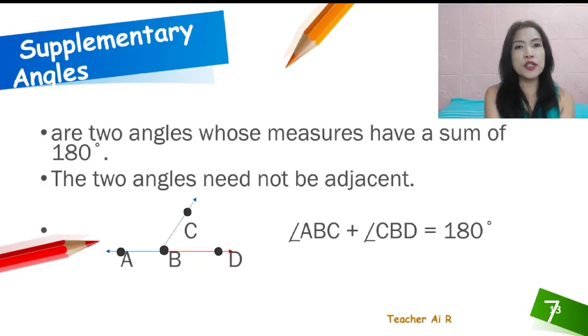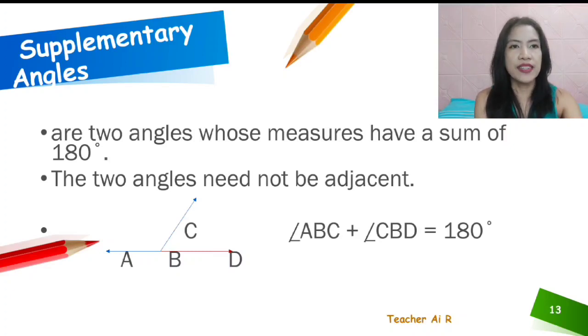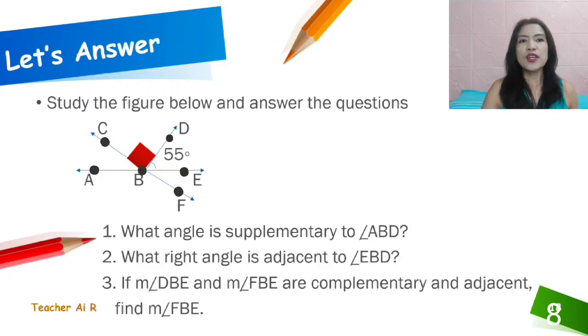And next is the supplementary angles. There are two angles whose measures have a sum of 180 degrees. And the two angles need not to be adjacent also. If you could see there, the figure there.